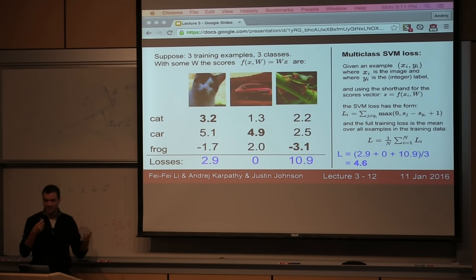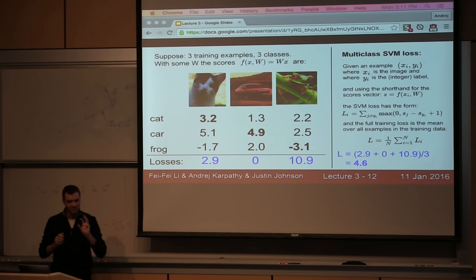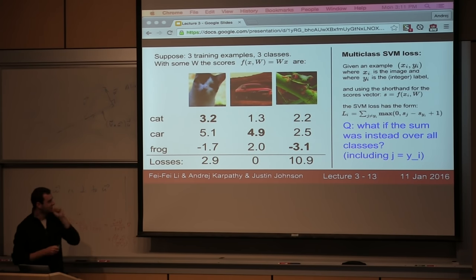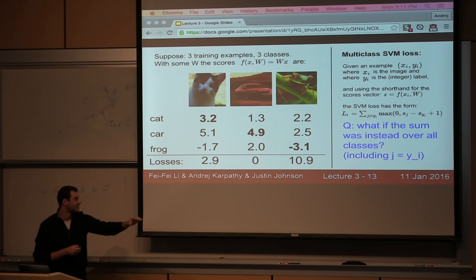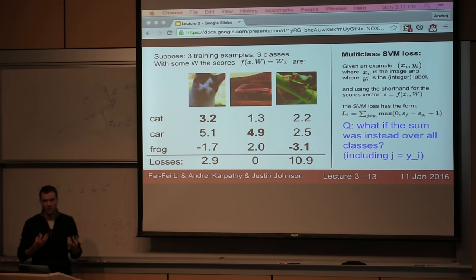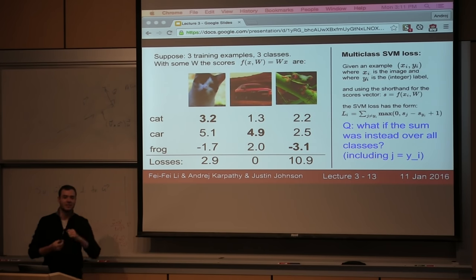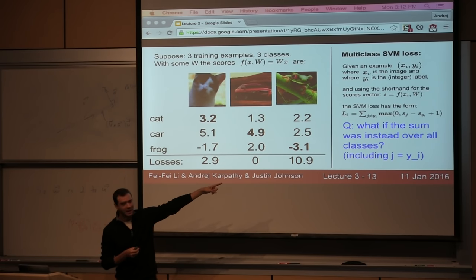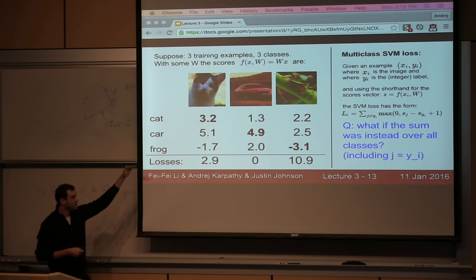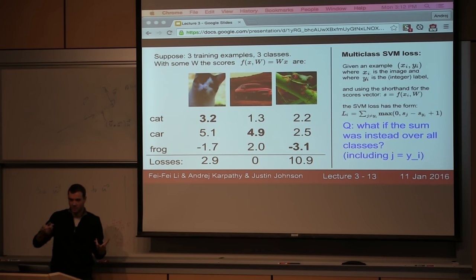Now some questions to test your understanding. First, what if the sum was over all classes instead of just incorrect ones? If we allowed J to equal y_i, the score of y_i would cancel itself, you'd end up with a 0, and really you'd just be adding a constant of 1 — inflating the loss by a constant. That's why we have the constraint J not equal to y_i.